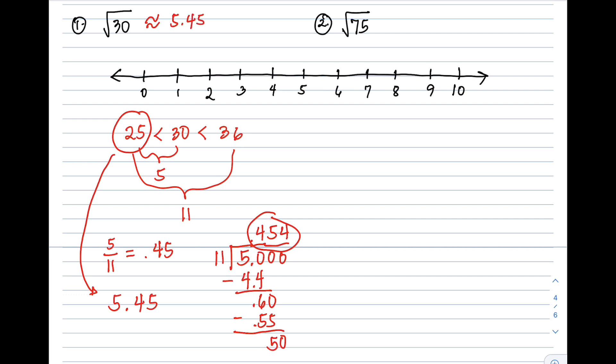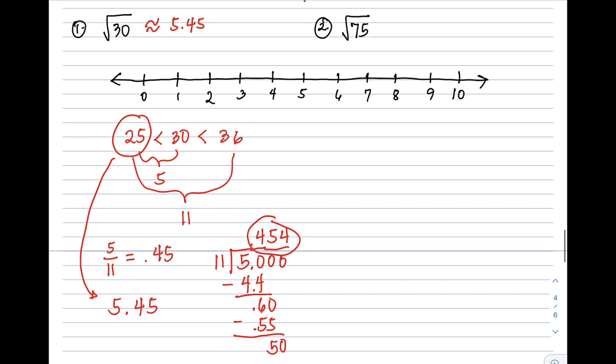Since we need to plot square root of 30, we know it's between 5 and 6. If this is the midpoint at 0.5, then 5.45 is somewhere here. This is our square root of 30.